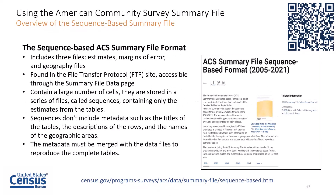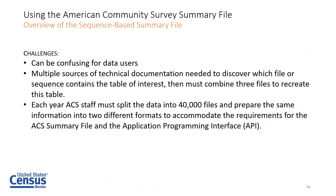To use the sequence-based summary file, users must locate three files: the summary file estimates, the margins of error, and geography files. These files contain a large number of cells and they are stored in a series of files called sequences that contain only the estimates from the tables. Then users must follow several steps to merge the files in order to create the tables. The sequence-based format can be confusing for data users. Multiple sources of technical documentation are needed to discover which file or sequence contains the table of interest.